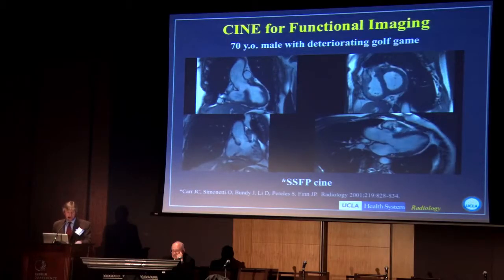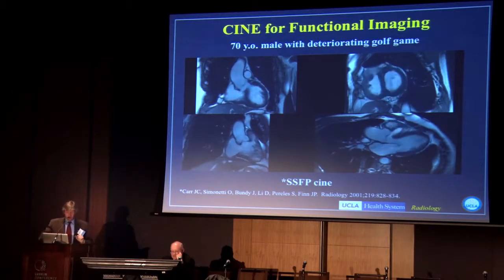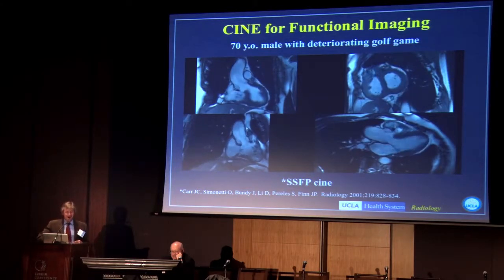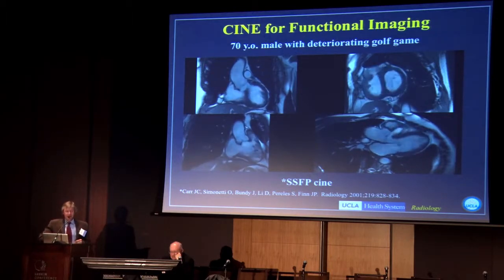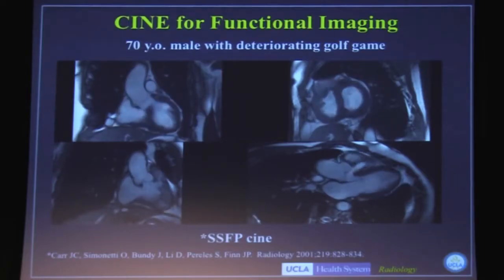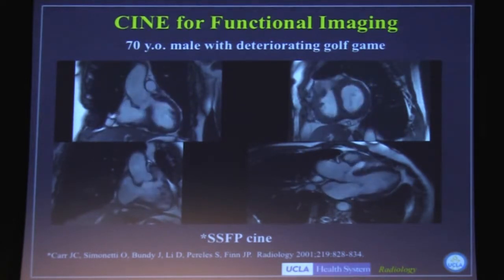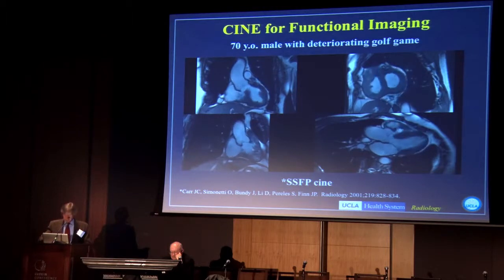On CINE imaging, here's an example. This patient presented acutely with a deteriorating golf game, but had more of an excuse than most of us. As we can see, this is a perfect example of untreated tetralogy of Fallot. We can see all of the features here on CINE imaging. This technique has been around for quite a while — we developed it originally at Northwestern, and now it's pretty much used everywhere.